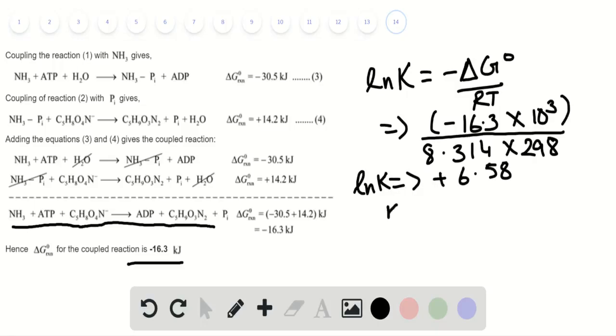Removing the natural log, the value of K is 7.20 × 10².